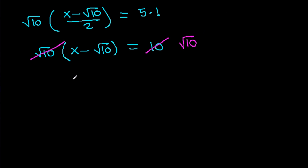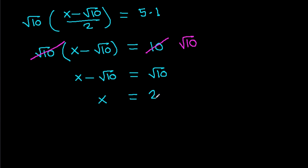In triangles ADE and EMC: angle ADE equals angle EMC equals 90 degrees, and angle AED equals angle ECM equals theta. So by AA similarity, triangle ADE is similar to triangle EMC. The ratio DE/MC equals AE/EC, giving 1 / ((X−√10)/2) equals √10 / 5. Cross-multiplying: √10 × (X − √10) = 10, so √10 · X = 20, meaning X equals 2 times the square root of 10.